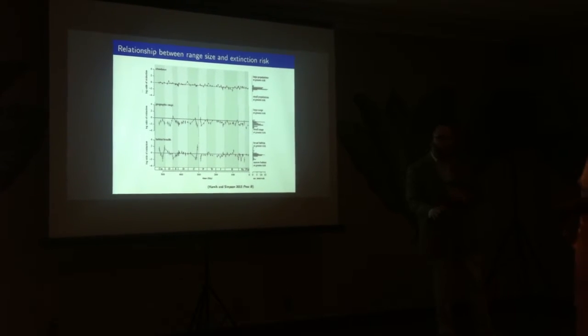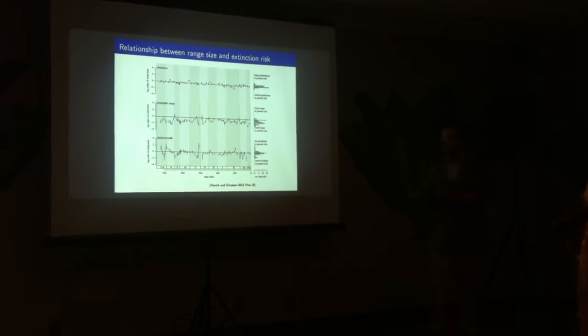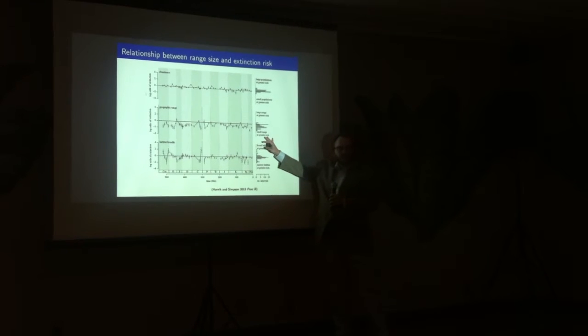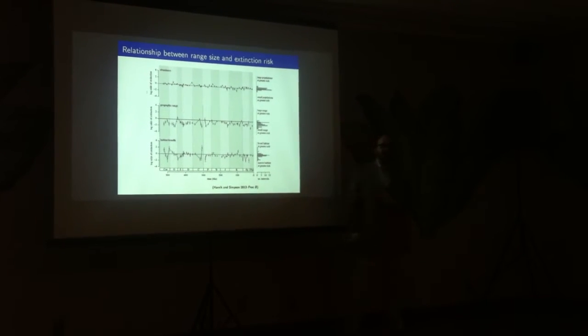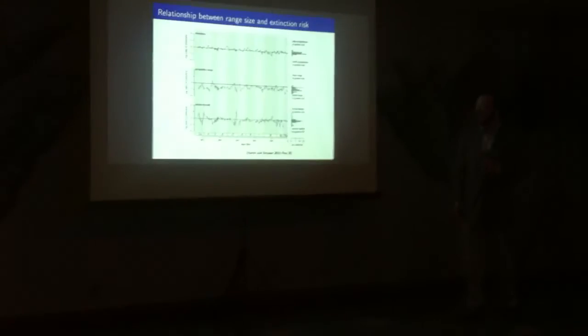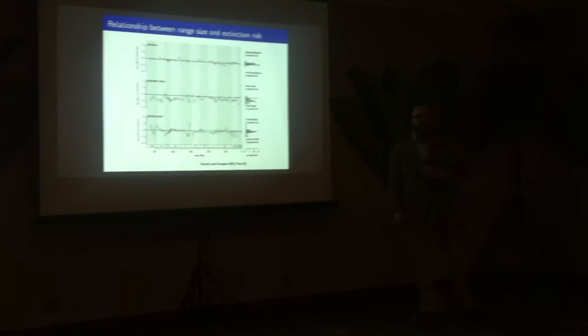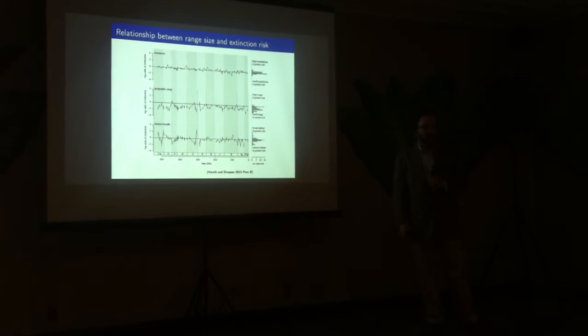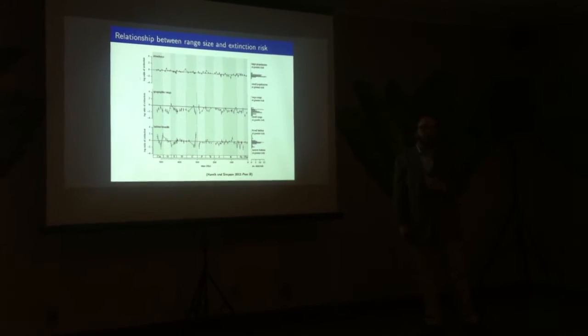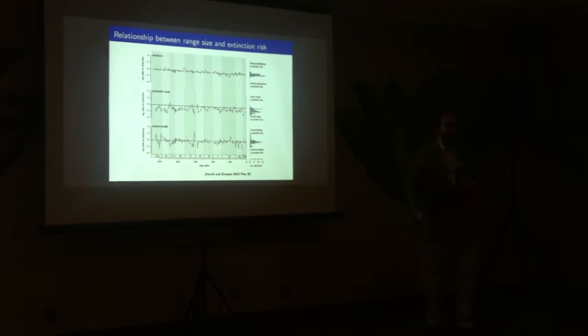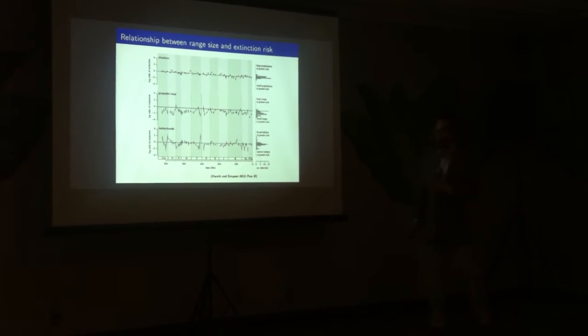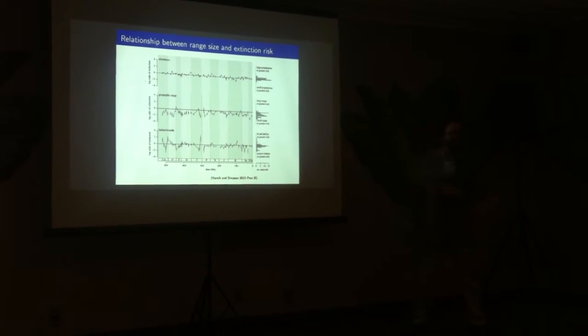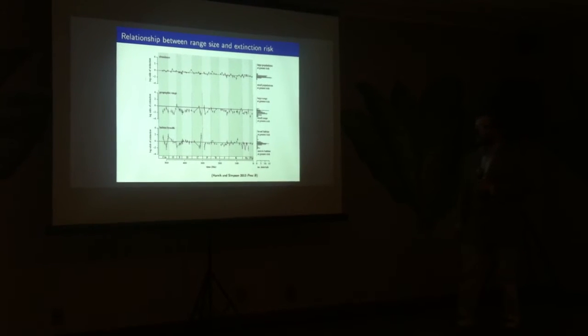One thing we do know, I would argue, is that if you have a larger geographic range, you have a lower extinction risk. And you can base this entirely on random processes. If you are present on the entire globe and other species are present on half the globe and you destroy half the globe, you're more likely to survive. It's that simple. And so I would say we know that. It's one of the few things we know. Sometimes it doesn't hold.